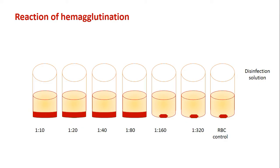Neuraminidase is therefore called the receptor-destroying enzyme, or RDE. It is produced by many bacteria, including Vibrio cholerae, and is also present in many vertebrate cells. Destruction of receptors leads to reversal of hemagglutination and release of the virus from the red cell surface, a process known as elution.